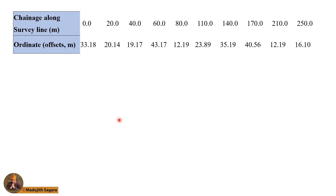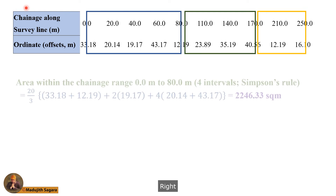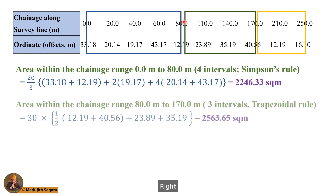I will show the three regions again. First, I will calculate the area within the chainage range of 0 to 80. The equation used is Simpson's rule, and the final answer is 2246.33 square meters.